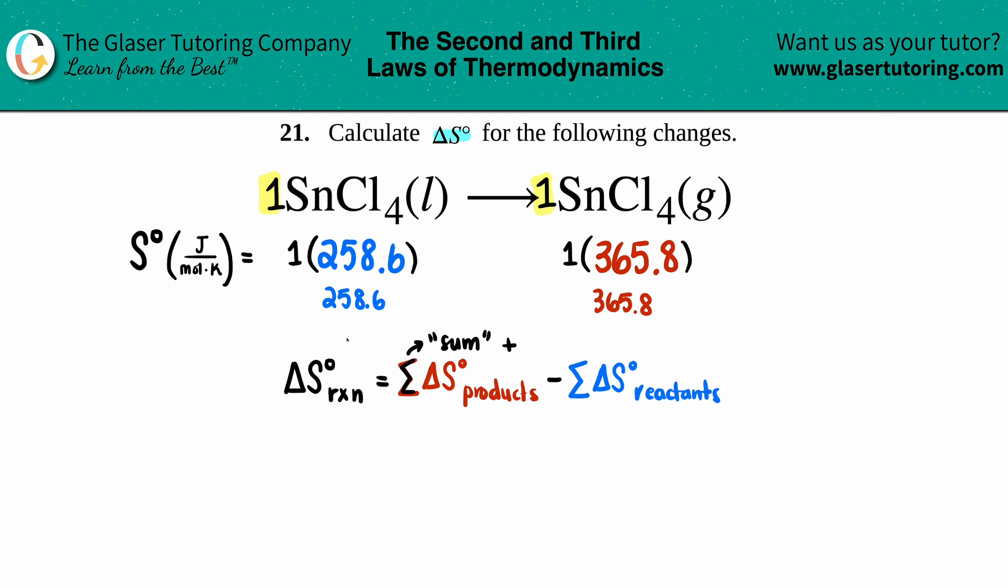This would still be 258.6 and this would be 365.8, and that's all the products and all reactants. Now all we have to do is take those values and plug it into the equation: products minus reactants. So ΔS° for the reaction would be the sum of my products, which was literally just 365.8, and I will subtract the total reactants, which was 258.6.